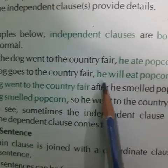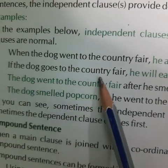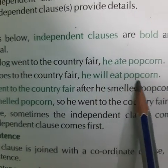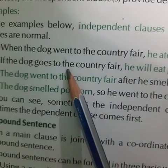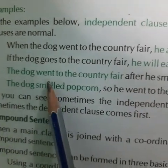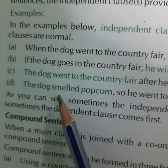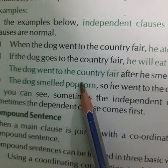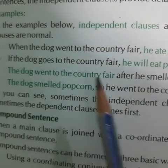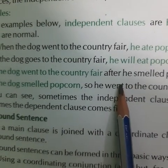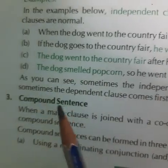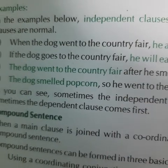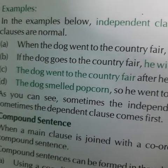'If the dog goes to the country fair, he will eat popcorn.' Again, the dependent clause 'if the dog goes to the country fair' completes its sense only with the independent clause 'he will eat popcorn.' Similarly: 'The dog went to the country fair after he smelled the popcorn' — the dog smelled popcorn, so he went to the fair. These are the independent clauses, and those are the dependent clauses. Sometimes the independent clause comes first and sometimes the dependent clause comes first — it does not matter.